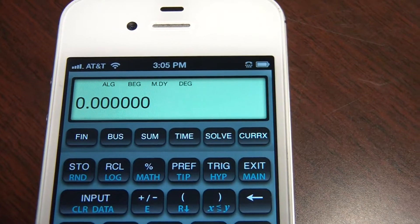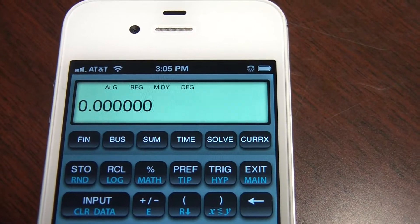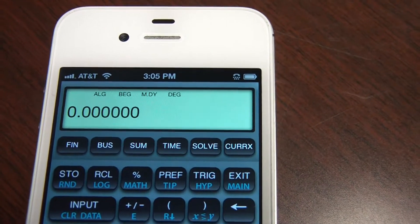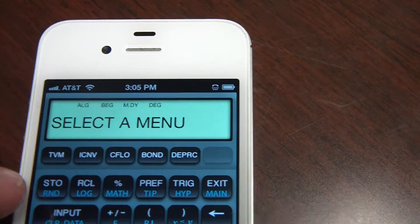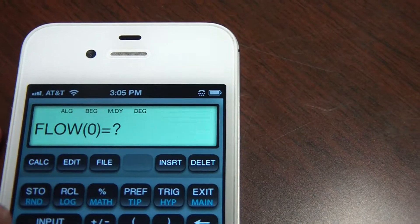An uneven cash flow problem using my 17B2 Plus emulator on my iPhone. First thing I have to do is select the Finance menu. And it says CFLO, that's cash flow. Select the cash flow menu.